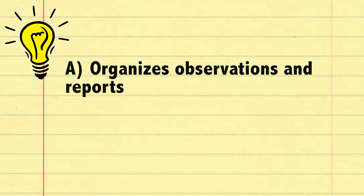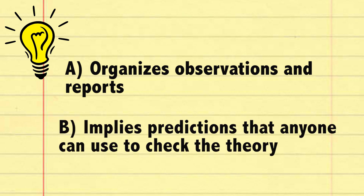Overall, a theory will be useful if it: a) organizes observations and reports, and b) implies predictions that anyone can use to check the theory. But theories are subject to change. Eventually your research might lead to a revised theory that better predicts or organizes what you know. That's the beauty of the scientific method and its self-correcting process.